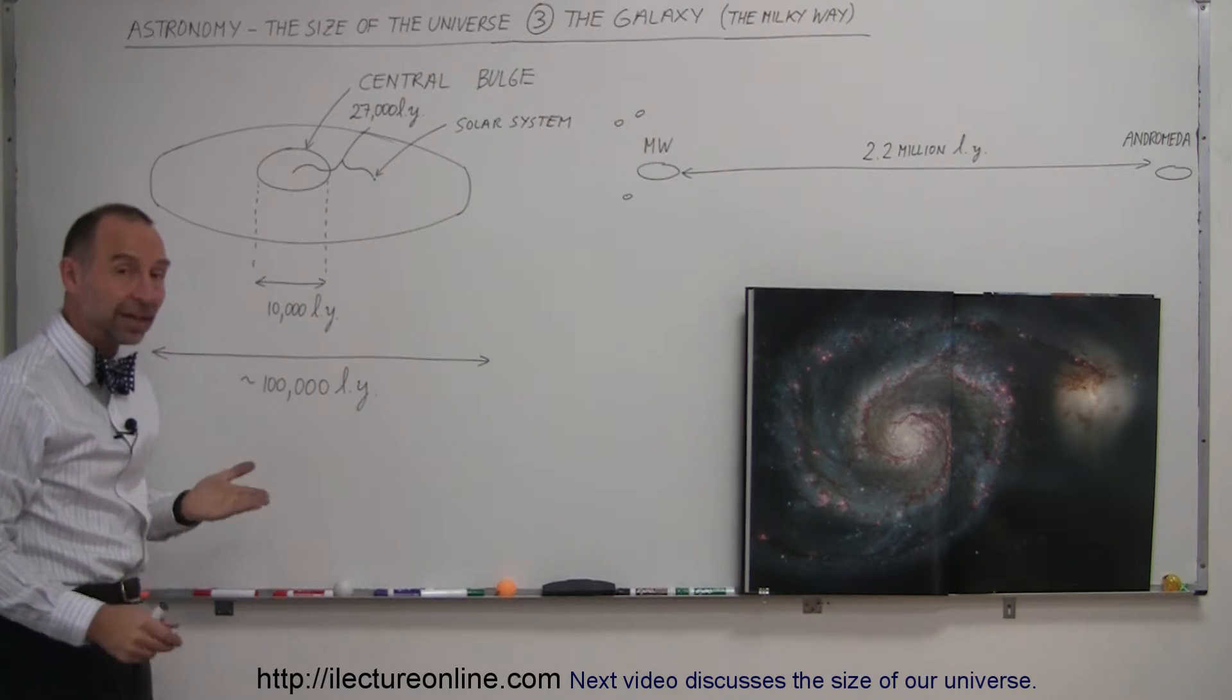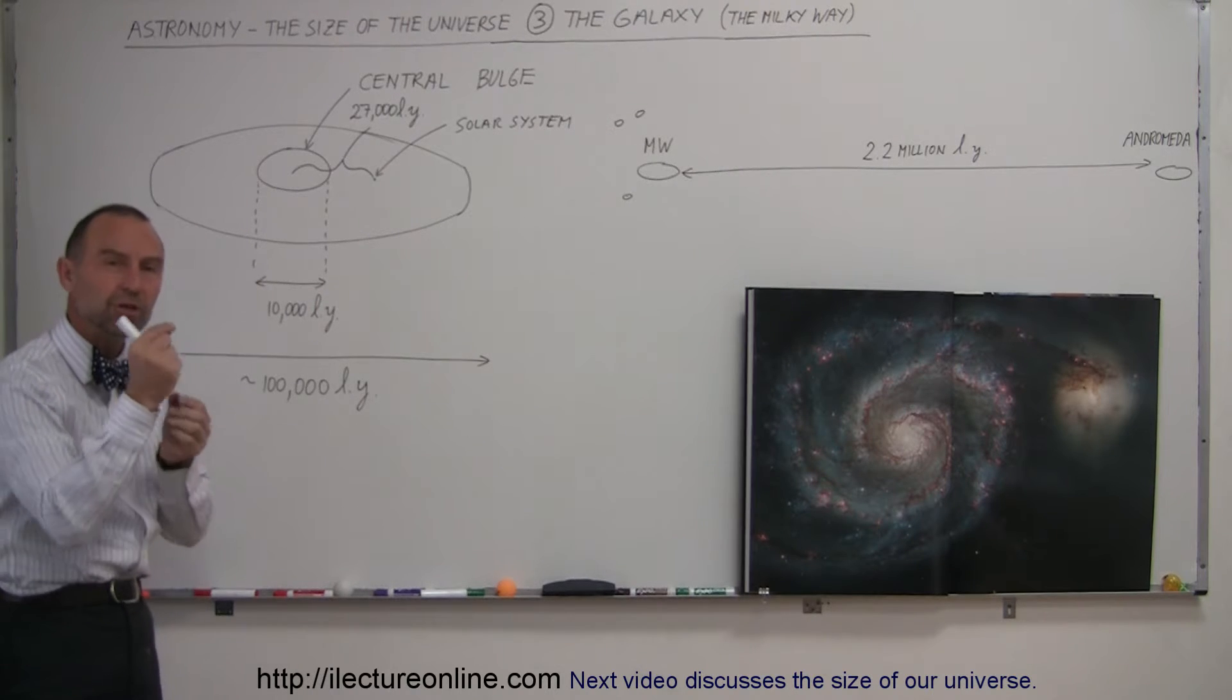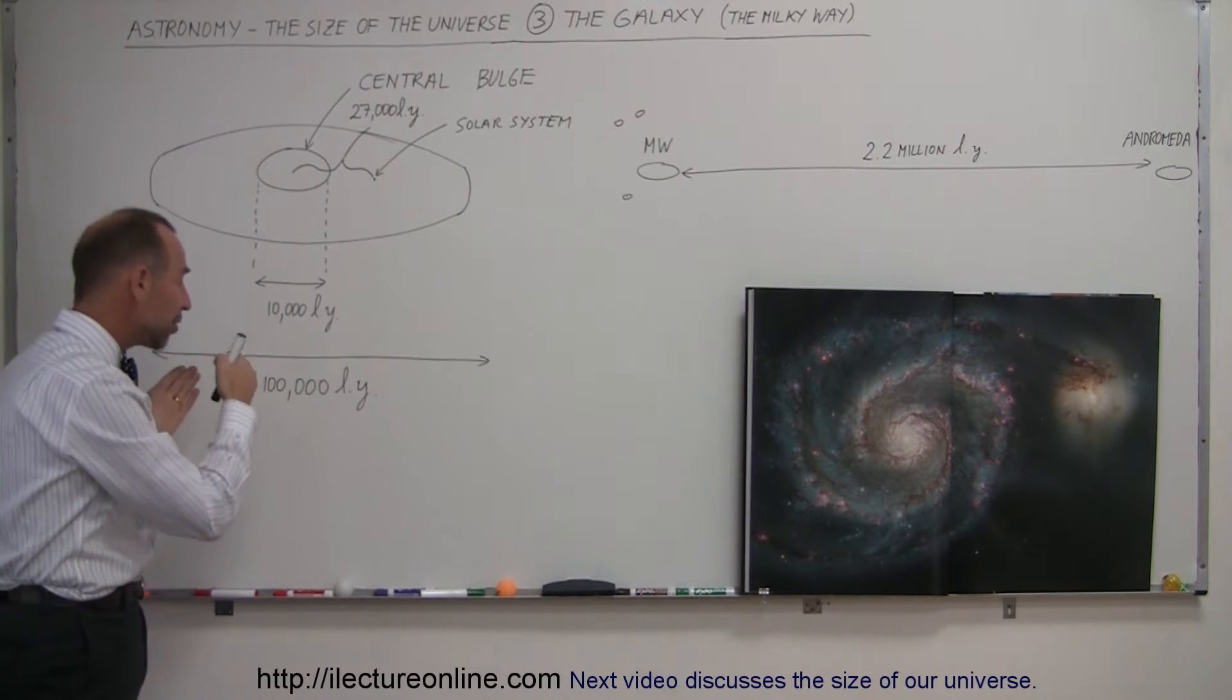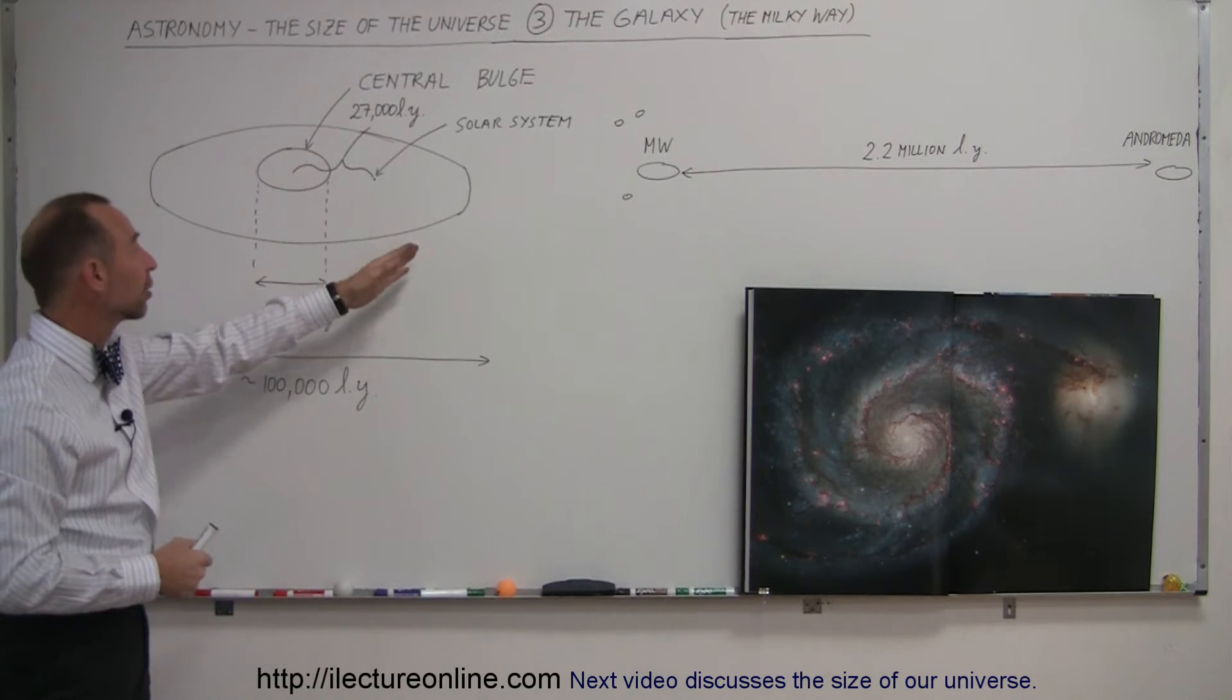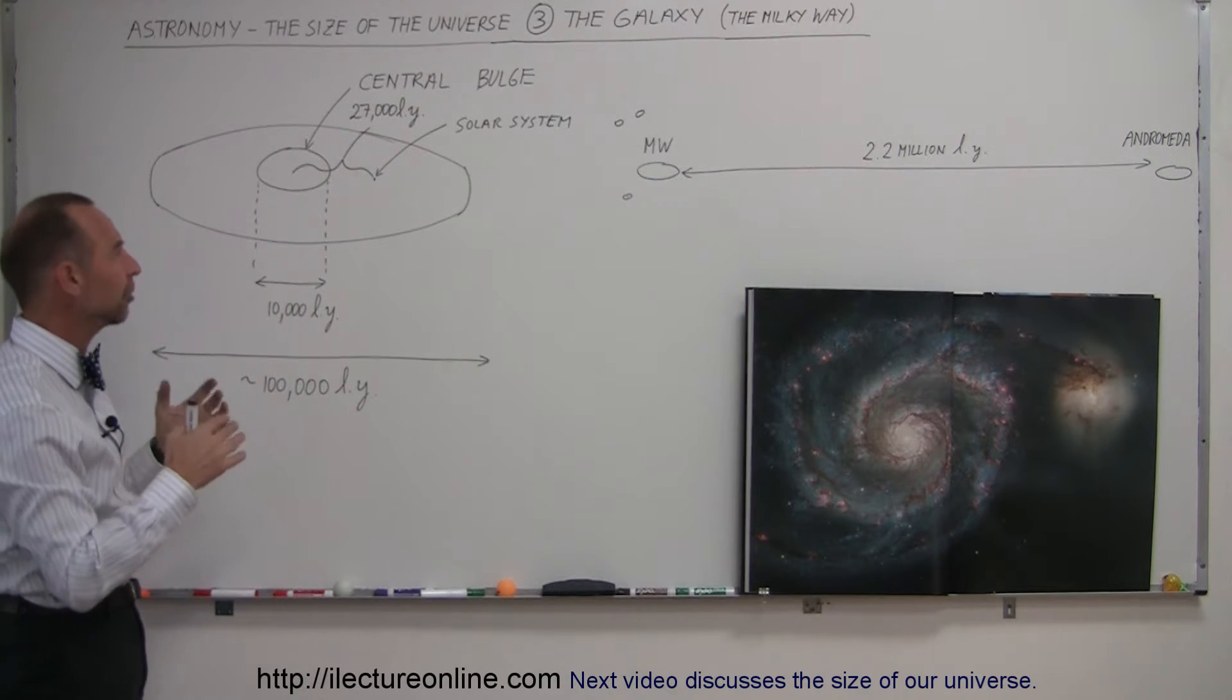Now, remember, light travels at 186,000 miles per second. It goes from here to the moon in just over a second, from here to the sun in a little bit over eight minutes. But it would take 100,000 years for a light beam to get across the Milky Way galaxy. It's an immense region, just absolutely immense.